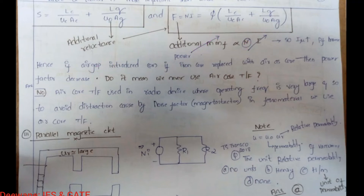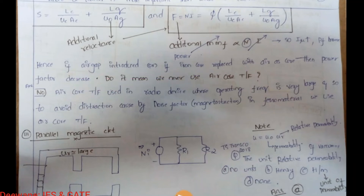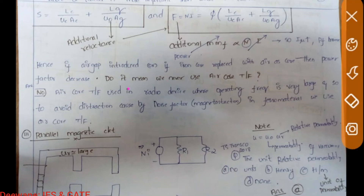If air gap is introduced or if iron is replaced with air as the core, power factor decreases. But does that mean we never use air core transformers? No — we use air core transformers where the frequency is very large, because air core transformers do not have hysteresis losses and do not saturate.